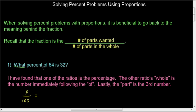Now, of denotes the whole. The other ratio is whole. So of 64, this is the whole. And so that number always goes on the bottom.